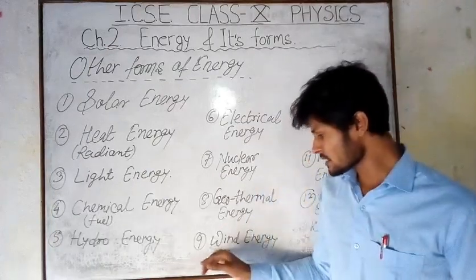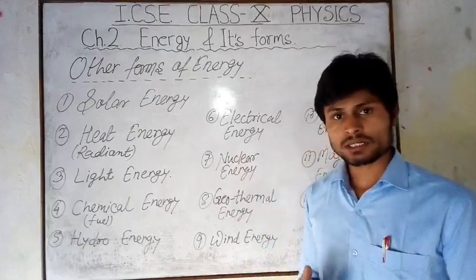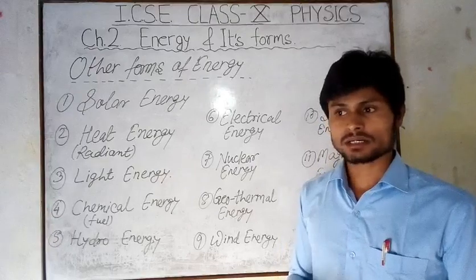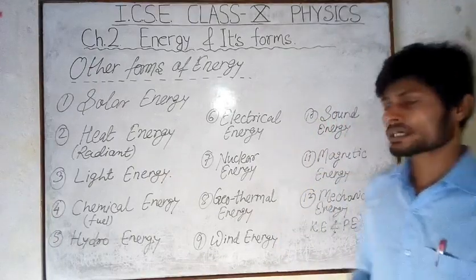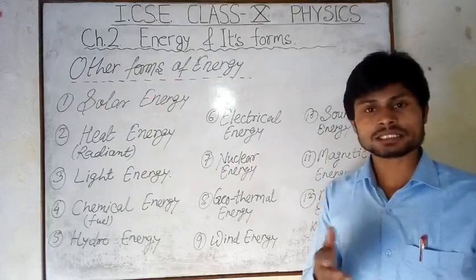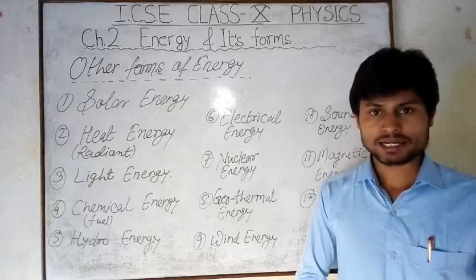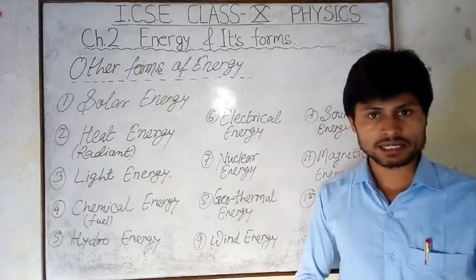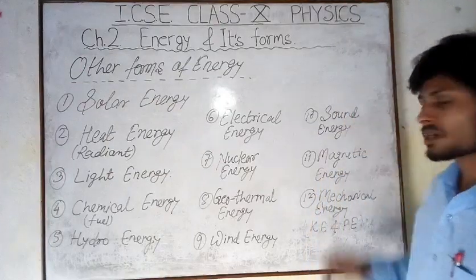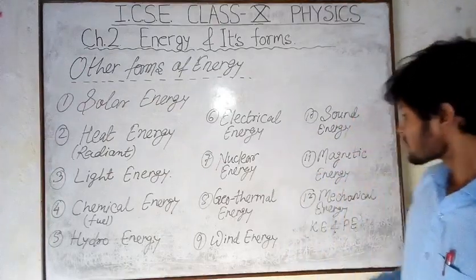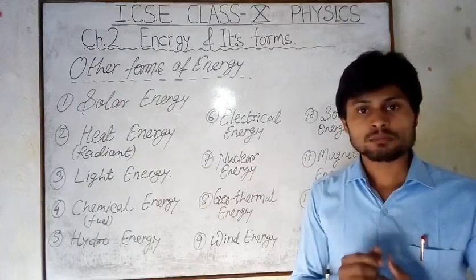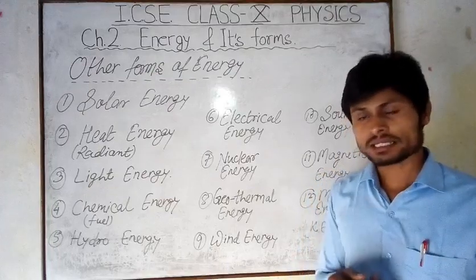Wind energy: the blowing wind causes the rotation of wind mills and this generates electricity. Sound energy: sound is caused by vibration, and vibration is a type of motion that causes vibrational energy. So sound is also a form of energy. Magnetic energy: the poles of a magnet have potential energy, and this energy is called magnetic energy.